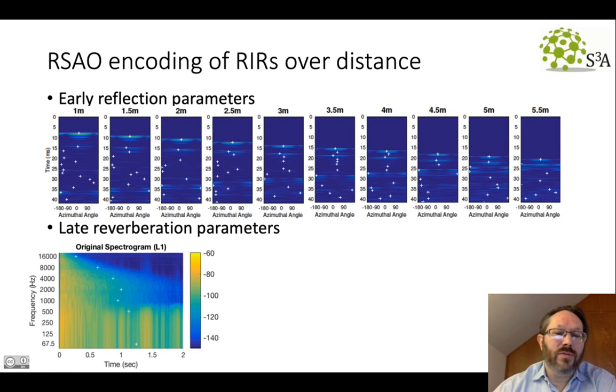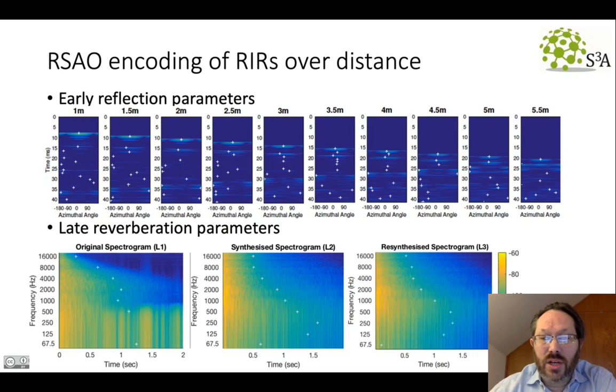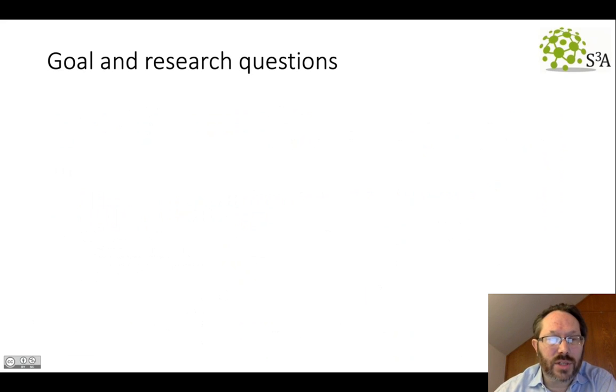Also, of course, there was the late reverberation part, and to test our encoding of this, we took the original information in the late tail and analyzed it in terms of its frequency bands to get our decay parameters and energies. And then we used that to render a synthesized spectrogram of the same thing. In order to validate our procedure, we took that synthesized spectrogram, estimated the parameters again, and then re-synthesized a new version of that late tail.